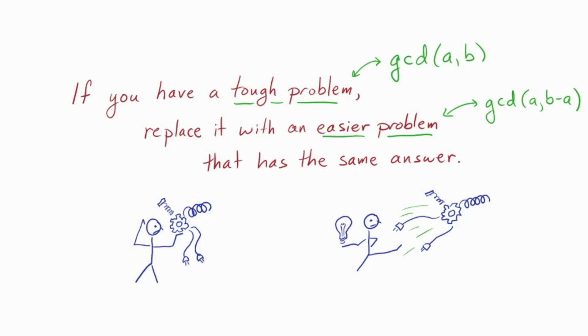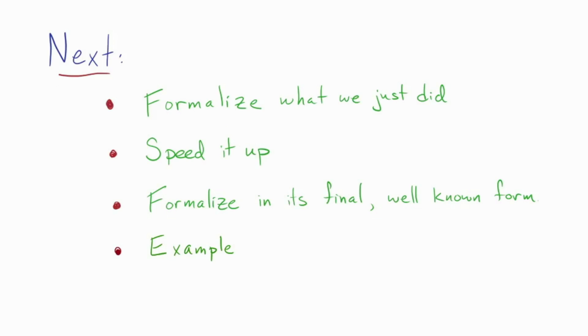So I hope this explanation will stick with you and allow you to rediscover the Euclidean algorithm any time you forget it. I'm going to use the rest of this video to formalize the algorithm and make it a little faster. So first we'll write down the algorithms as presented, then we'll use a trick to speed it up, and then we'll write it down again. That's its more well-known form. And then we'll finish off with an example.